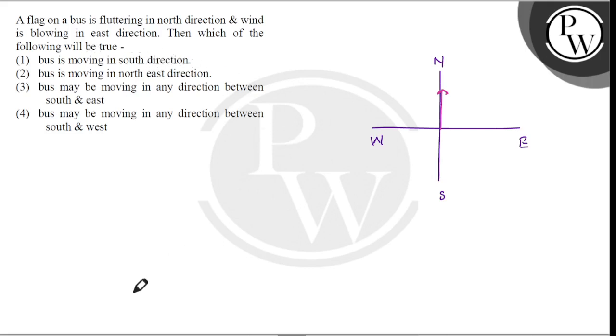With respect to the ground, the wind is blowing in east direction. This is the velocity of wind with respect to ground. And we have velocity of wind with respect to bus. This is velocity of wind with respect to bus.